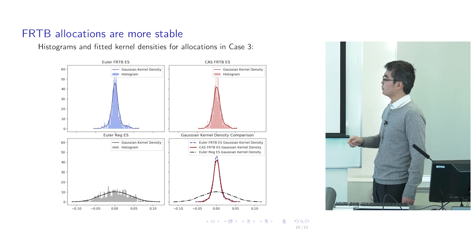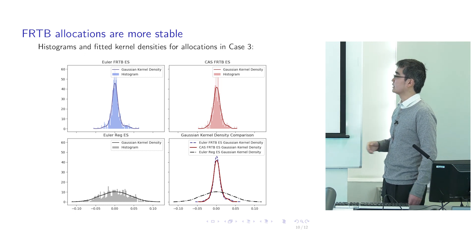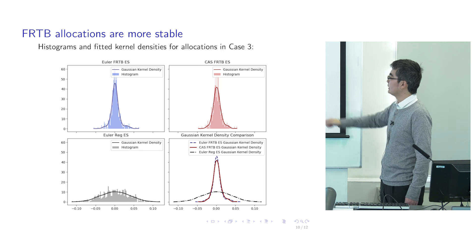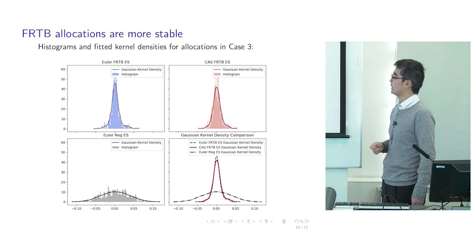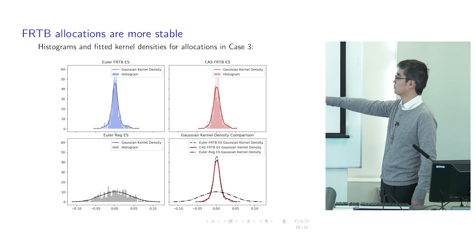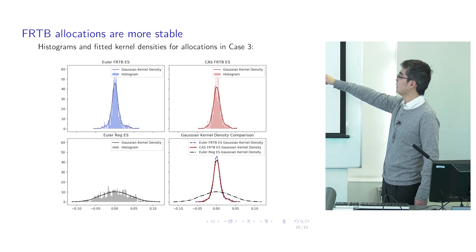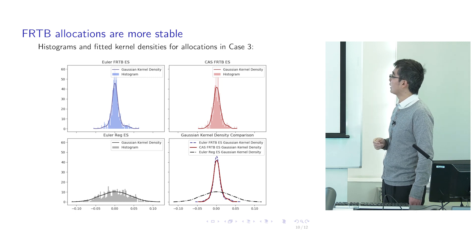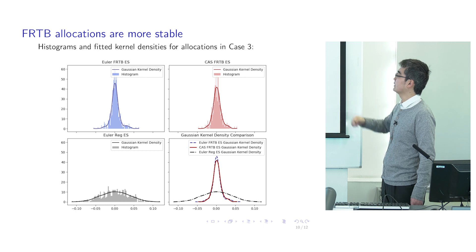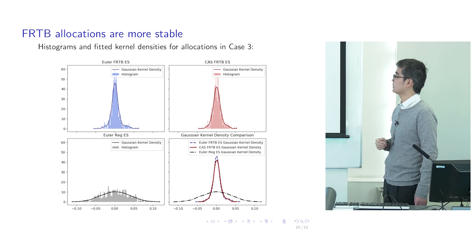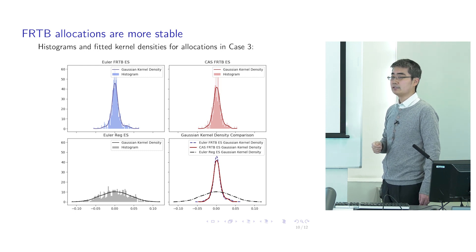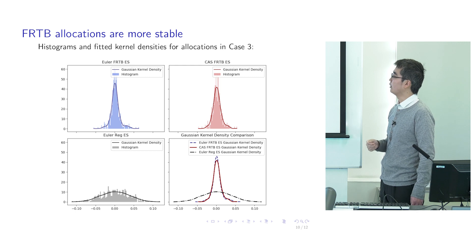We also show that the distribution of allocation is much tighter in the FRTB compared to the current regulation framework. The lower left panel shows the Euler allocation under the current Expected Shortfall, where the allocation is quite widespread among different buckets. However, the FRTB allocation methods are both much tighter, and the constrained Aumann-Shapley produces an even tighter allocation compared to the Euler allocation method, because it is subject to more averaging. However, it is also more computationally expensive.